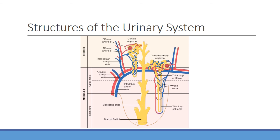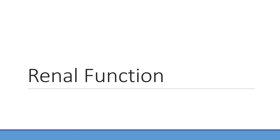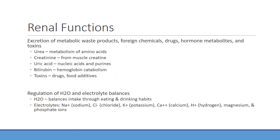What do the kidneys do for us? First, they eliminate waste products, foreign chemicals, and drugs — excretion is very much reliant on kidney function in pharmacodynamics. Urea is a primary metabolite of amino acid breakdown that we eliminate through the kidneys. Creatinine is broken down from muscle — clinicians use creatinine to estimate renal function through creatinine clearance, which is important because of how it gets or doesn't get reabsorbed.